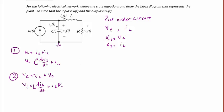So now let's solve the first equation for dvc/dt. So dvc/dt is equal to negative il over C plus u over C.